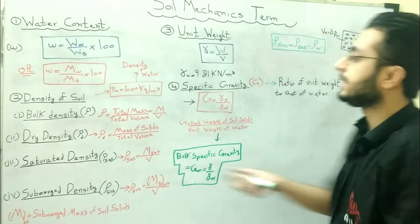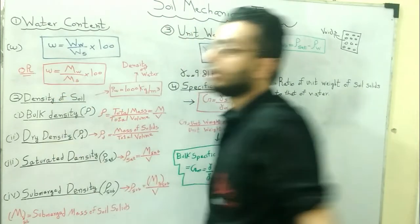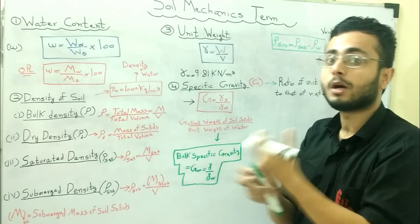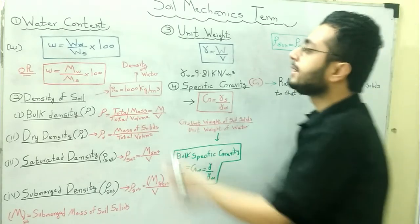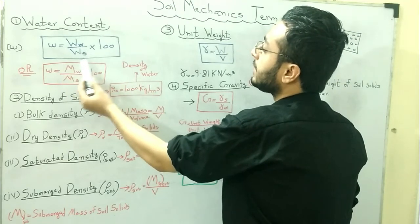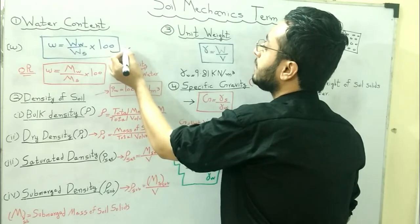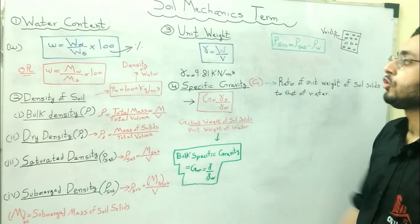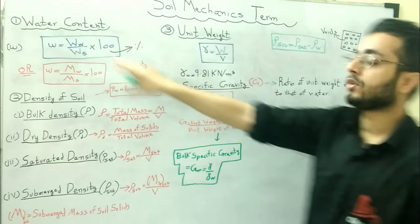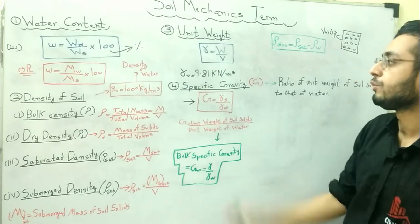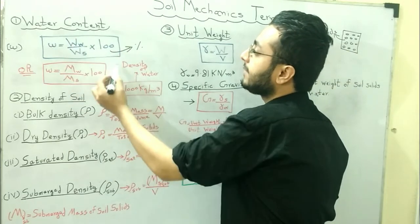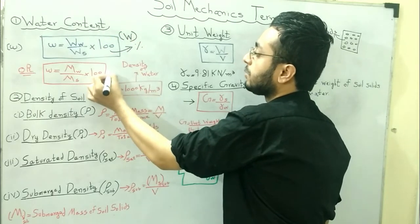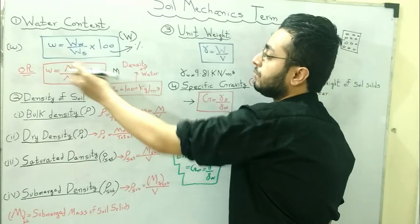In these formulas, the subscript 's' indicates soil solids. Water content w is equal to weight of water divided by Ws, multiplied by 100, because water content is expressed in percentage. It is the ratio of the weight of water present in the soil to the weight of the soil solids. We can also express it in the form of mass: mass of water divided by mass of soil solids.